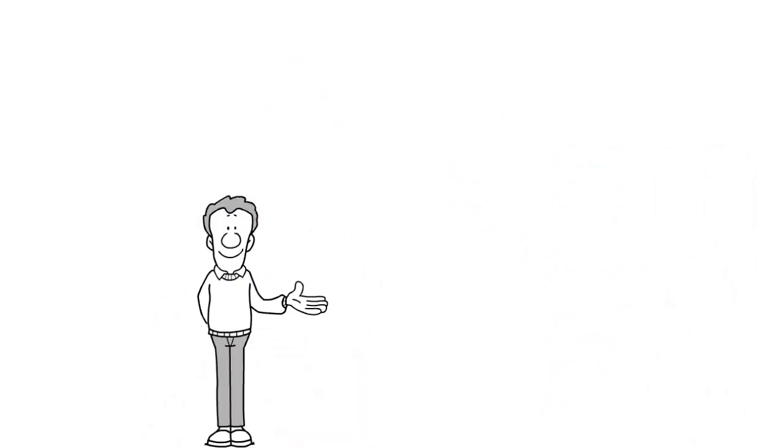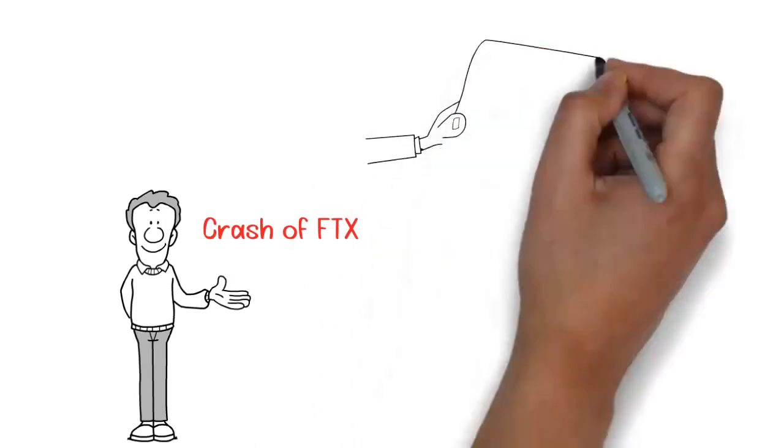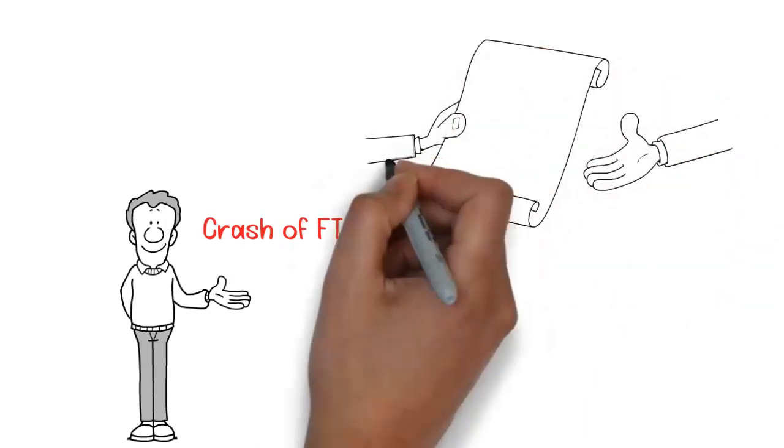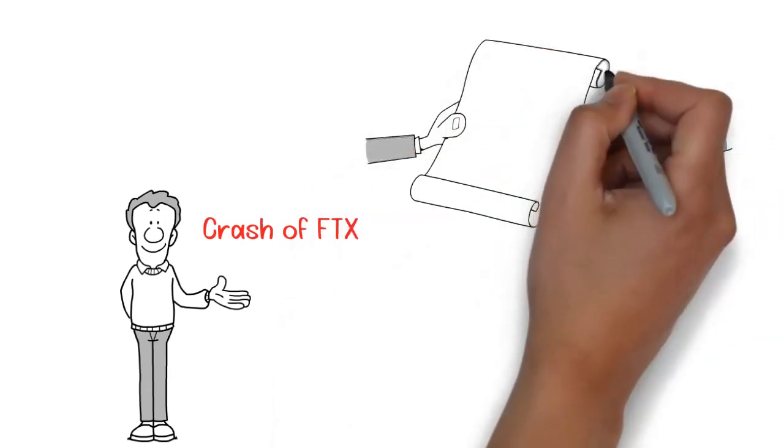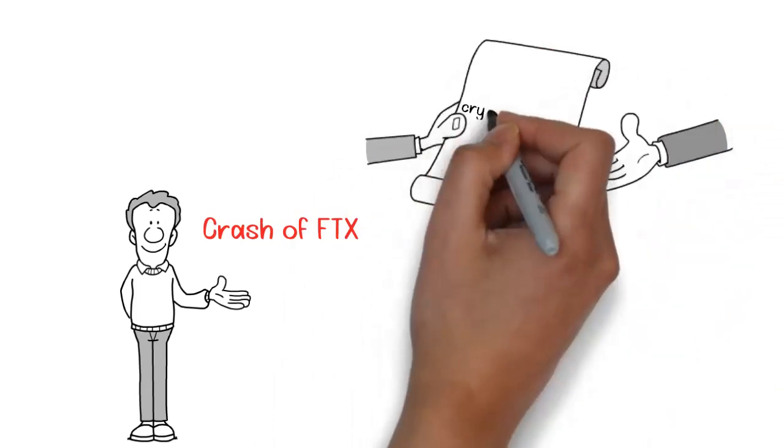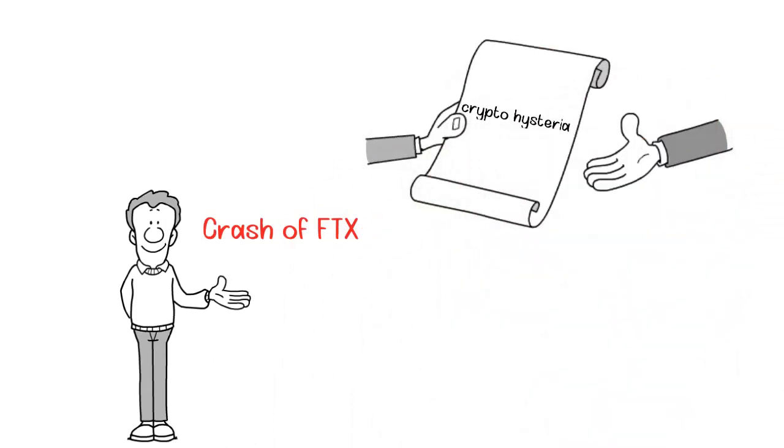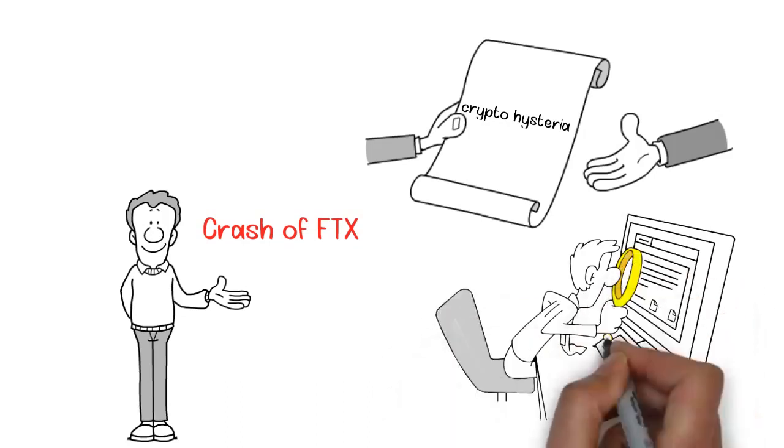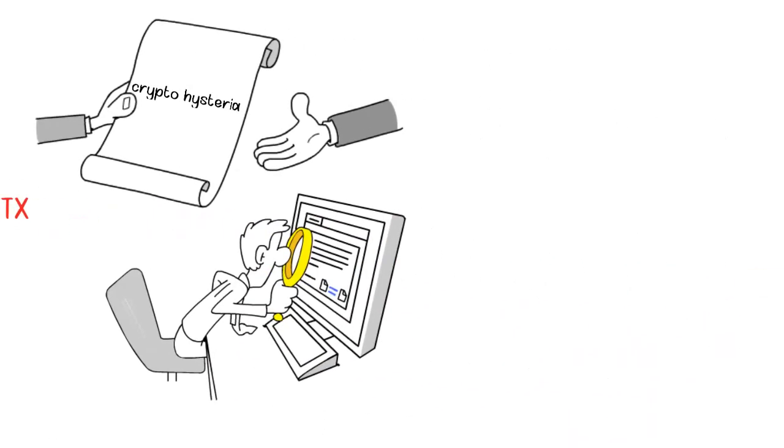One significant event that Rickards had previously warned about was the crash of FTX, a prominent cryptocurrency exchange. Back in 2017, Rickards expressed skepticism about cryptocurrencies, referring to it as crypto hysteria. He foresaw the risks associated with digital currencies and predicted that governments and the world's elites would eventually seek to control and exploit the crypto sector.